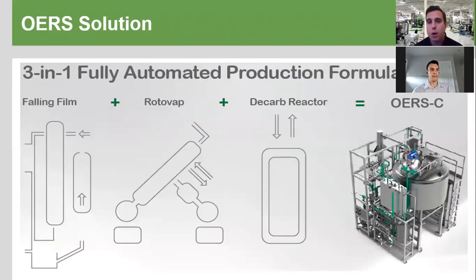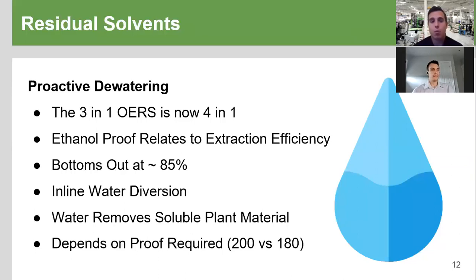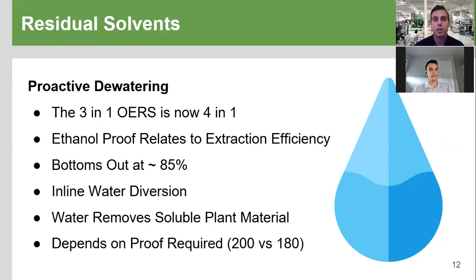This is a visual representation of the three-in-one formula: bulk recovery, residual recovery, and the decarb reactor all in one solution. We've now upgraded our ORS three-in-one solution to a four-in-one solution. We already have our Meritech F-series large-scale fractional distillation systems for inline automatic ethanol reproofing — generally for streams where the ethanol has been significantly degraded, with significant capital cost. What we're trying to do now is provide a lower-cost alternative: inline water diversion, helping prevent the amount of water carrying over with your ethanol.